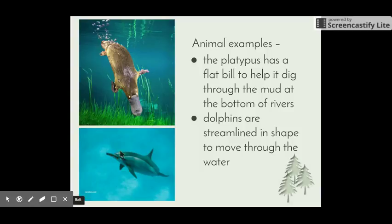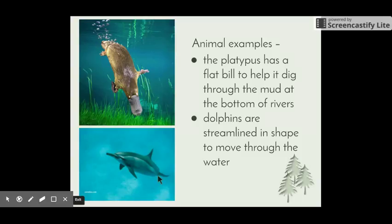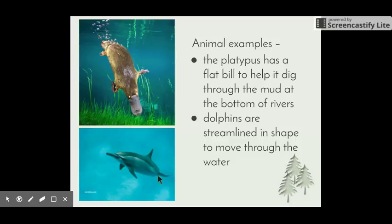Dolphins are a great example of structural adaptations. They have a streamlined body shape — their nose comes to a point and gently opens up to a wider midpoint, and the surface of their body is quite smooth. This helps dolphins move easily through the water. Water is quite viscous, so by having a streamlined shape they're able to move through it quickly.